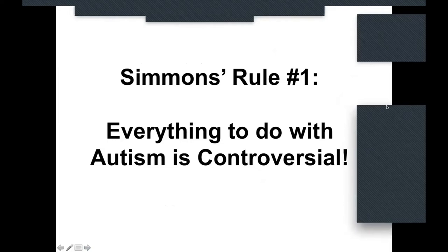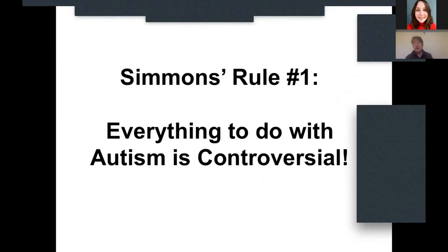The first thing I always say in talks about autism is what I've christened Simmons Rule Number One, and I hope to get my name somewhere: everything to do with autism is controversial. There are bound to be people who disagree with some of the things I say, and many aspects of the field are controversial. Just bear that in mind as we go through the material.